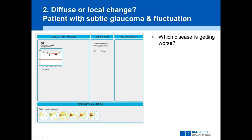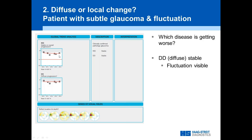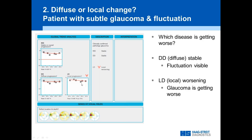Another example: a patient with subtle glaucoma but also some fluctuation, where the global trend analysis doesn't pick up progression because there's so much fluctuation in the MD. Looking at the diffuse trend, you can see this is exactly the same pattern — the MD jumps around because of this diffuse component, better and worse days. But looking at the LD — the local progression — we really see a significant change. The diffuse component can sometimes mask a small local change.